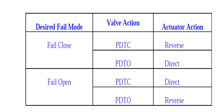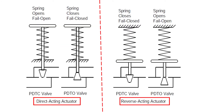This chart allows us to decide fail-safe conditions with respect to actuator action. We have already discussed the fail-safe modes — fail safe open, fail safe close, and lock in last position. From this chart you can clearly see that depending on your requirement: if your requirement is fail safe close, you can choose either a direct or reverse acting actuator; if the fail mode is fail safe open, you again have a choice of selecting direct or reverse acting actuator.